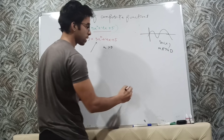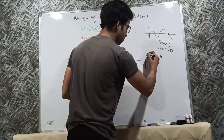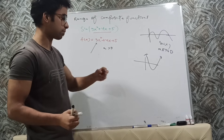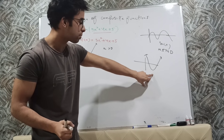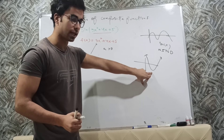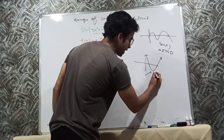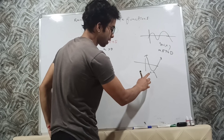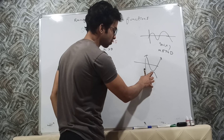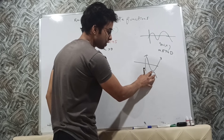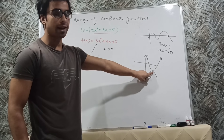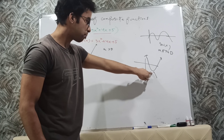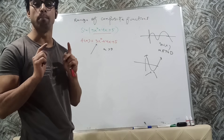No matter where the parabola is, it will always be an upward parabola. I'm drawing a rough sketch here — it can be in any quadrant. For an upward parabola, the minimum value occurs at the vertex. So if I can find the y-value at the vertex, I'll have the minimum. At the vertex, the derivative equals zero. So I set the derivative equal to zero to find the x-value, then plug that into the original function to get the minimum value.